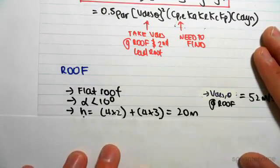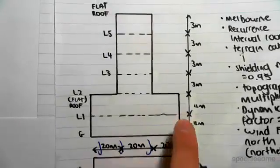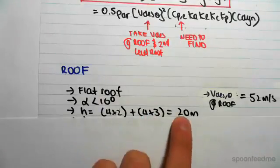The height of the building—the height of this roof—is four lots of two, sorry, two lots of four rather, and four lots of three. So working that out we'd get 20 meters.